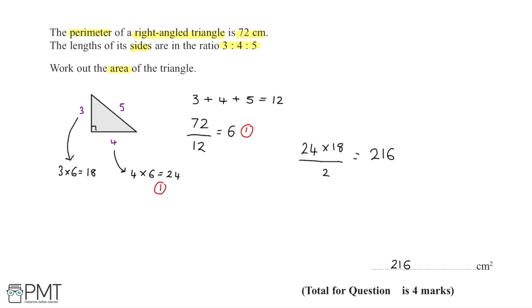The third mark is for working out the area using the formula base times height divided by 2. The fourth and final mark is awarded for the correct answer of 216.